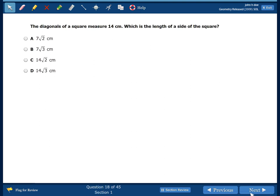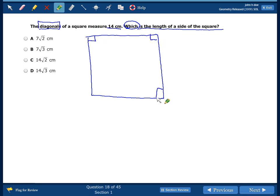This one here, again, we want to start off by looking for our keyword, which is the length of a side of a square. Well, we need to read the other information here. It says the diagonals of a square measure 14 centimeters. So the diagonals are 14 centimeters. So let's draw a square.